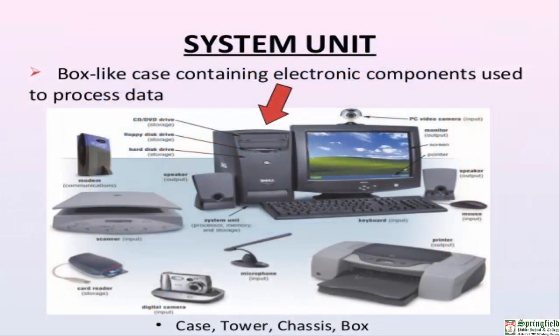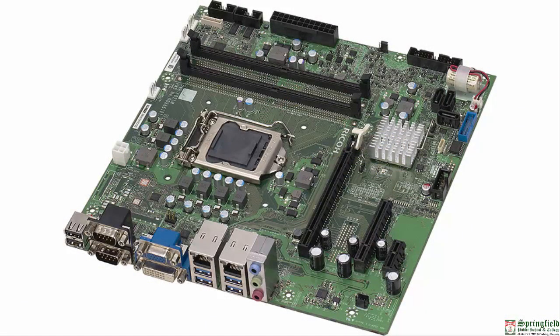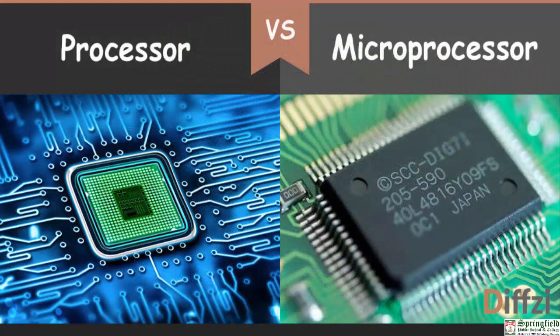The system unit is the main part of the computer. It includes the motherboard, power supply, drives such as DVD and hard disk inside the computer casing, and all input and output devices connected through ports. The motherboard is the main circuit board inside the system unit — it contains the microprocessor, main memory, expansion cards, many IC chips, connectors, and other electronic components.